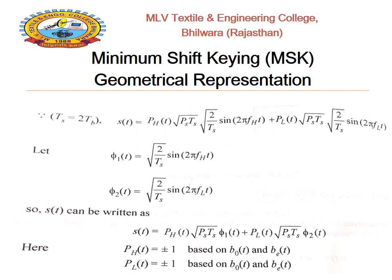The first expression is S(t) = PH · √(2/Ts) · sin(2π·FH·t) + PL · √(Ps·Ts) · √(2/Ts) · sin(2π·FL·t). That is a combination of the higher frequency component and the lower frequency component, where Ts = 2Tb. It is associated with two components PH1(t) and PH2(t), where PH1(t) is related to the higher frequency component FH(t) and PH2(t) is related to the lower frequency component FL(t).